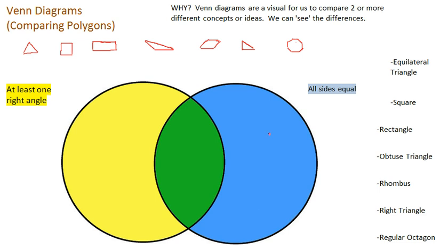On this side, which I've shaded blue, has to match whatever's in this criteria. In this case, it's all sides equal. So everything has to have all sides equal.